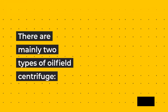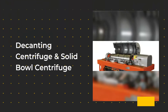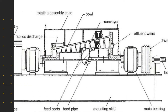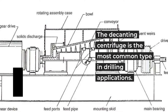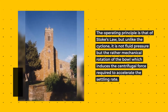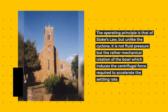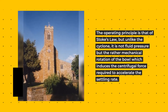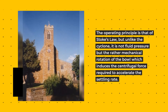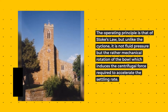There are mainly two types of oilfield centrifuge: the decanting centrifuge and the solid bowl centrifuge. The decanting centrifuge is the most common type in drilling applications. Its operating principle is based on Stokes law, but unlike the cyclone, it is not fluid pressure but rather the mechanical rotation of the bowl which induces the centrifugal force required to accelerate the settling rate.